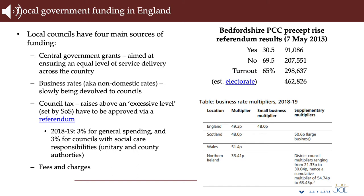Business rates are paid by businesses to local councils. Responsibility for business rates is devolved in Scotland, Wales and Northern Ireland, though it works in a broadly similar way. The bill is calculated as the rateable value multiplied by a multiplier. The rateable value of a property — assessed on a five-yearly basis by the Valuation Office Agency, an executive agency of HMRC — reflects the annual rent it could have been let for on the open market.